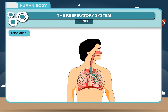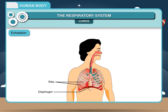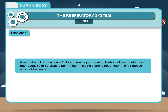Exhalation. During exhalation, the ribs move downwards and inwards and the diaphragm also moves up to return to its normal dome-shaped position. Thus, the size of the thoracic cavity and the lungs decreases and the air pressure increases. Thus, the air from the lungs is pushed out. A normal adult human takes 12–20 breaths per minute. Newborns breathe at a faster rate, about 30–50 breaths per minute. In a single breath, about 500 ml of air moves in or out of the lungs.